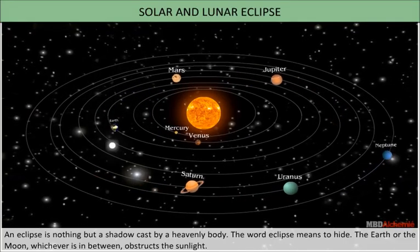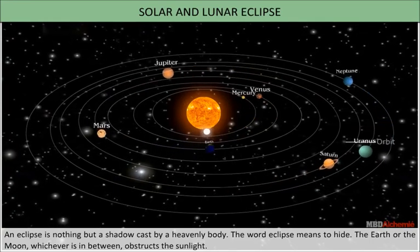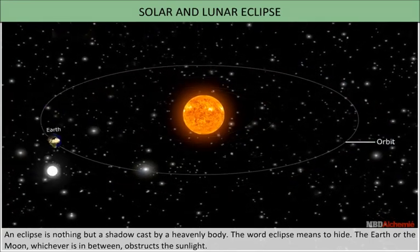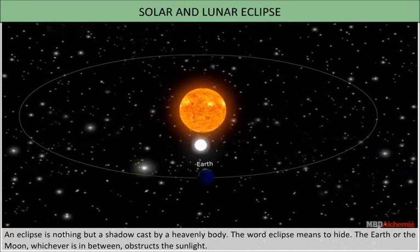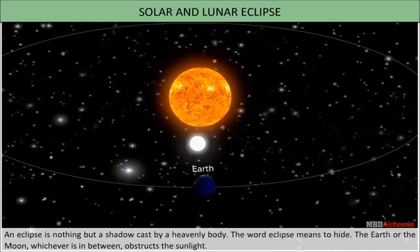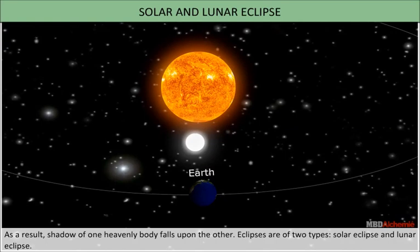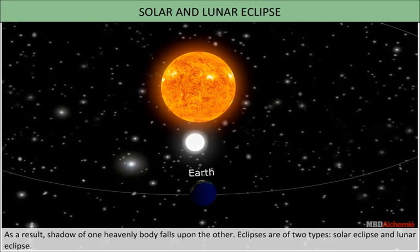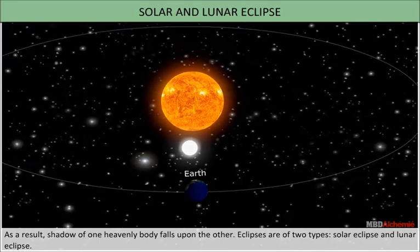Solar and lunar eclipses. An eclipse is nothing but a shadow cast by a heavenly body. The word eclipse means to hide. The earth or the moon, whichever is in between, obstructs the sunlight. As a result, the shadow of one heavenly body falls upon the other. Eclipses are of two types: solar eclipse and lunar eclipse.